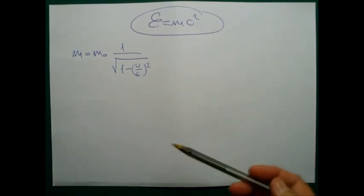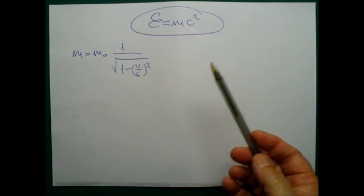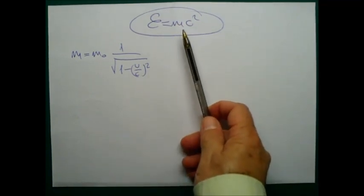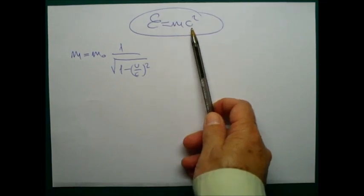Hi guys. Today we are going to prove Einstein's formula, that is energy equals mass times the speed of light squared.